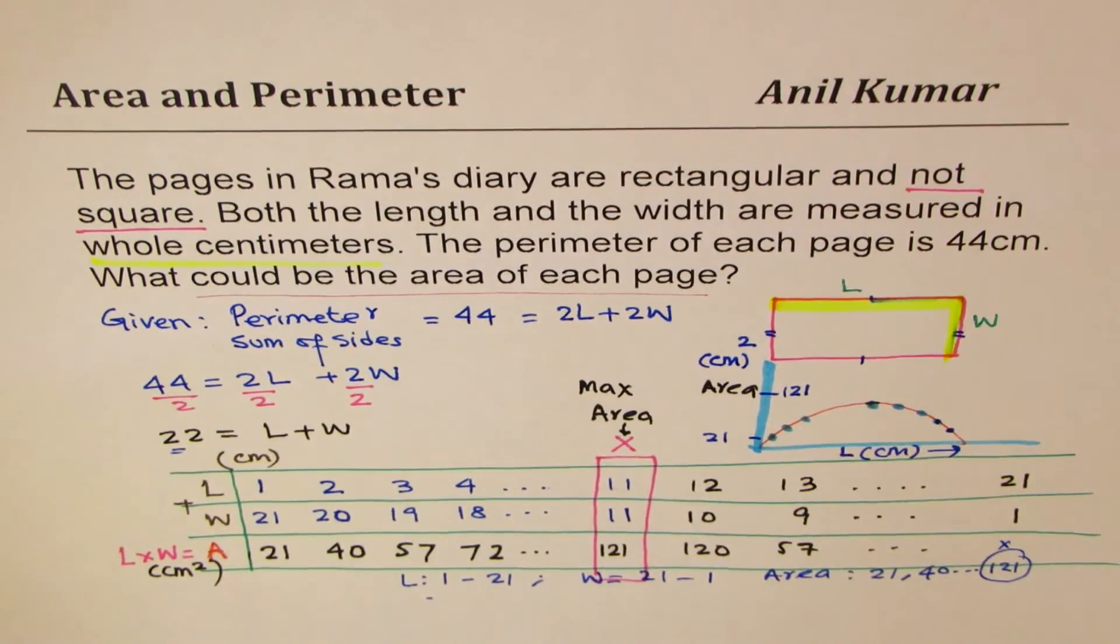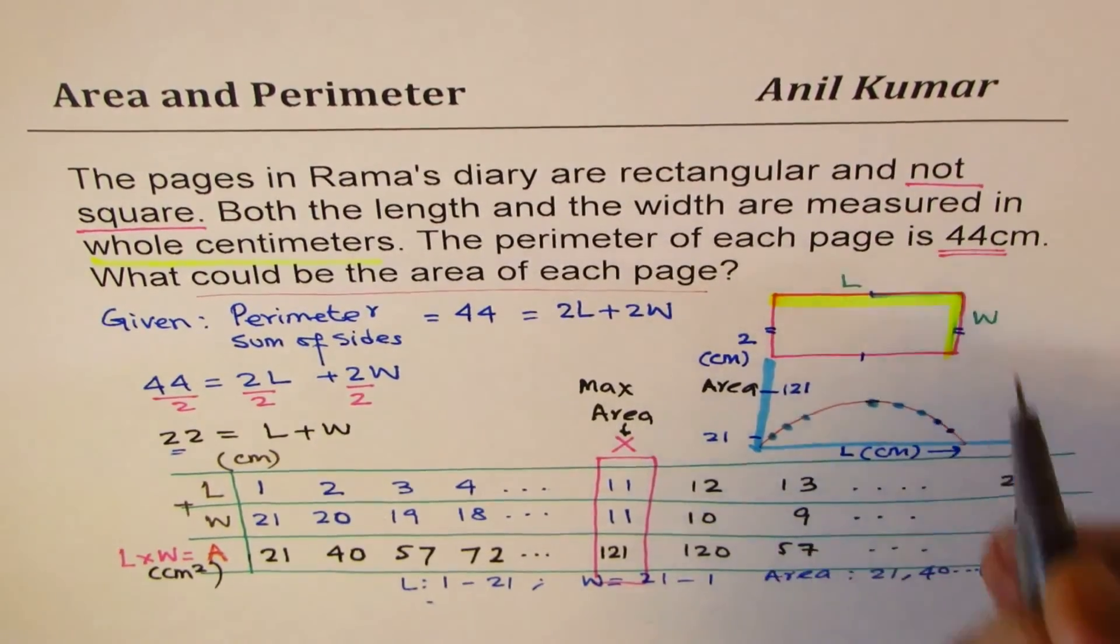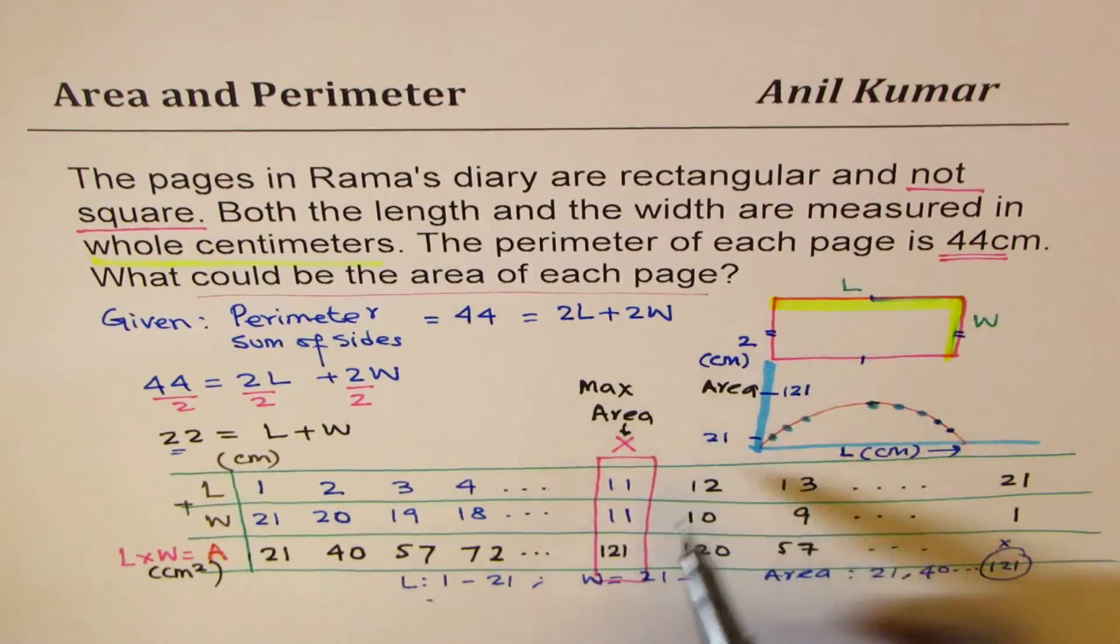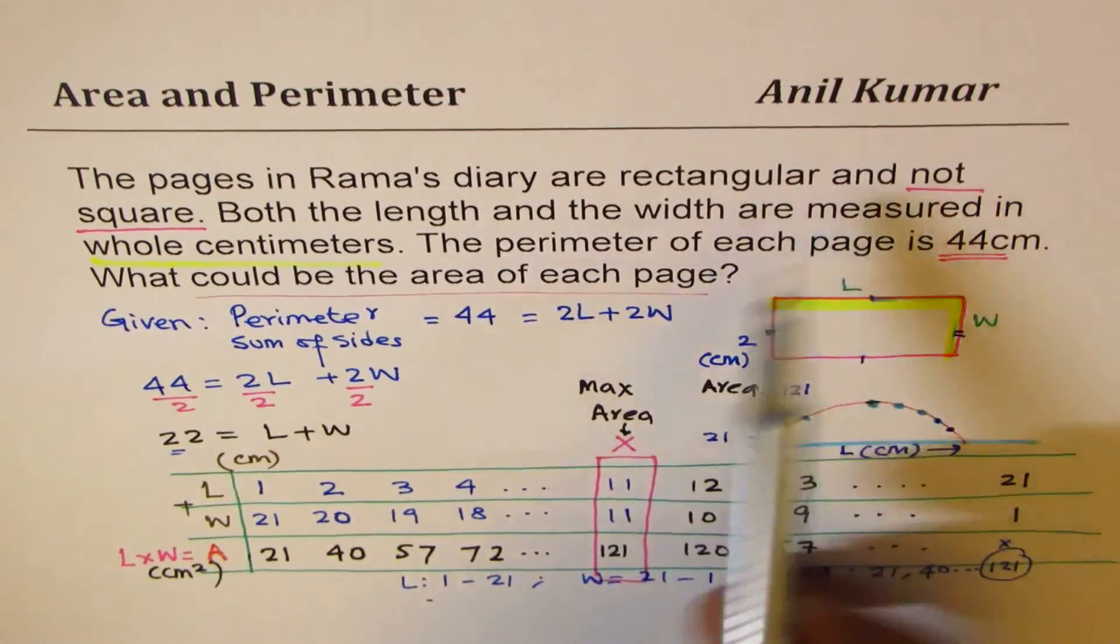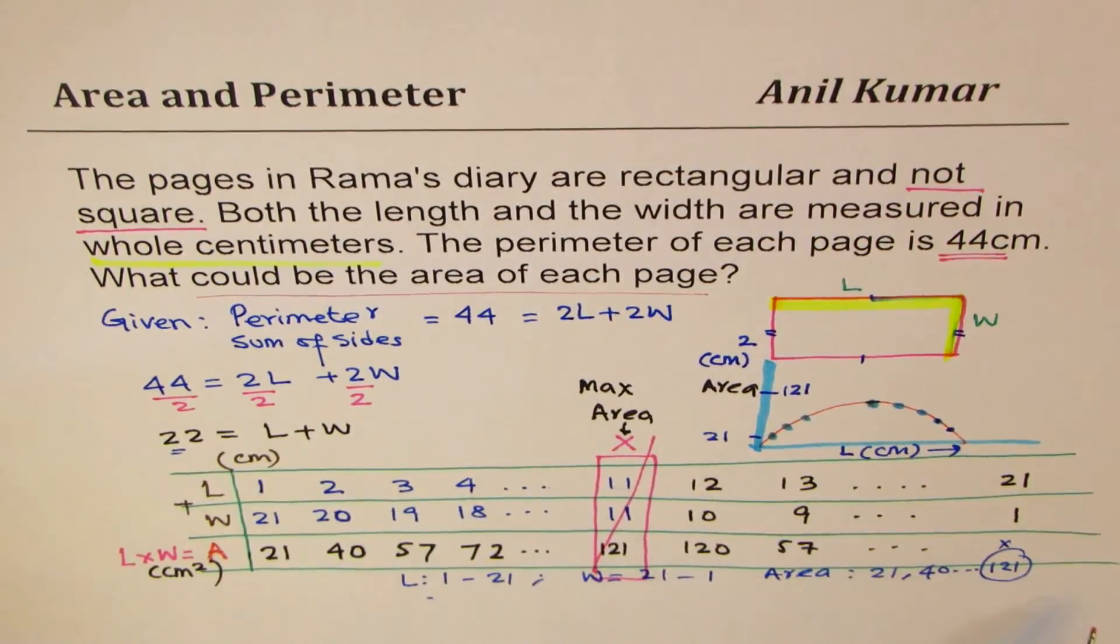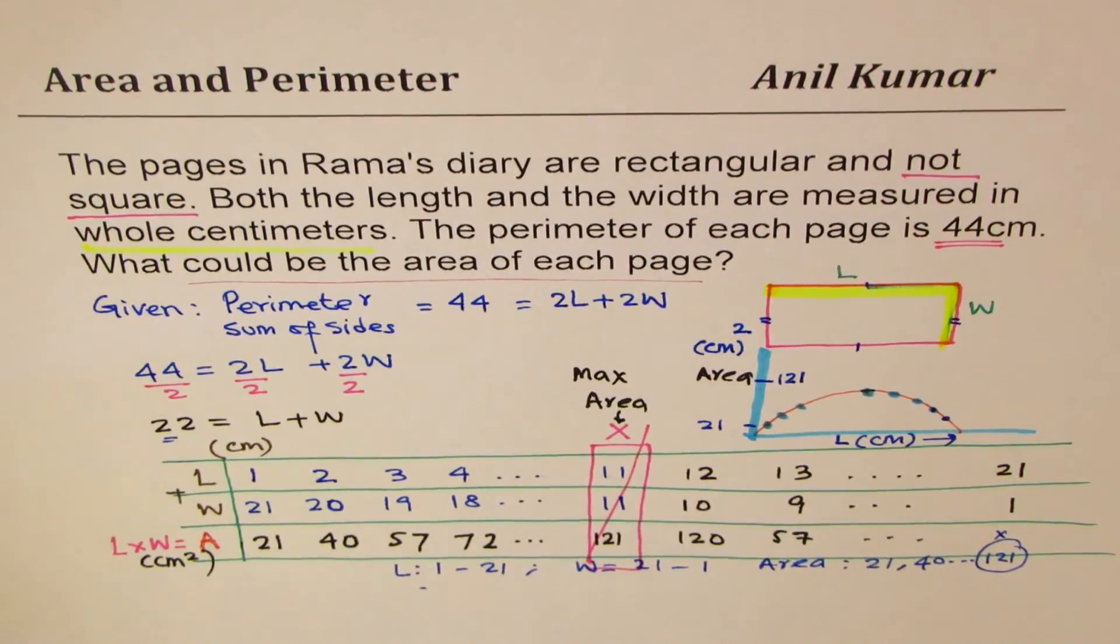I hope with this concept, you understand how to find the whole centimeter values which will give you perimeter of 44 centimeters and some other area. You notice that area is maximum for a square. Since the question says not square, do not include this. Include all other values. Does it make sense to you? I hope that's absolutely clear. Feel free to write your comments and share your views. Thank you for posting the question and keep posting. Thank you and all the best.